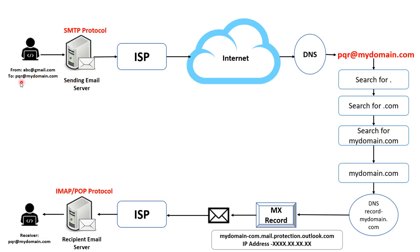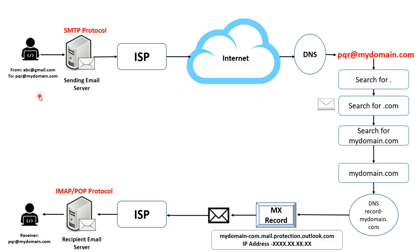To download or fetch the email sent by abc@gmail.com, the recipient utilizes IMAP or POP protocol. Remember, the sender used the SMTP protocol to send the email. To receive email, the recipient uses IMAP or POP protocol. This is how your email is delivered from sender to recipient across the internet.